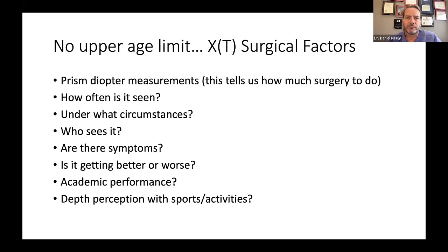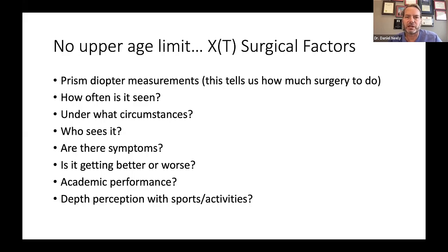Usually the patient population we see with intermittent XT is age two to six. We frequently also see adults who have had this their whole life, maybe still intermittent or maybe become manifest. I think the results are better if they're still intermittent. Those that have become constant XTs are harder to straighten out, harder to keep straight, tend to have very large angles sometimes requiring three or four muscles, and may not reacquire full sensory status or stereopsis.